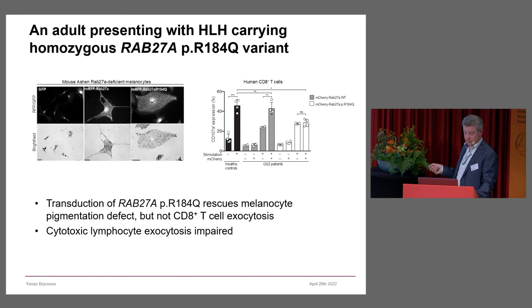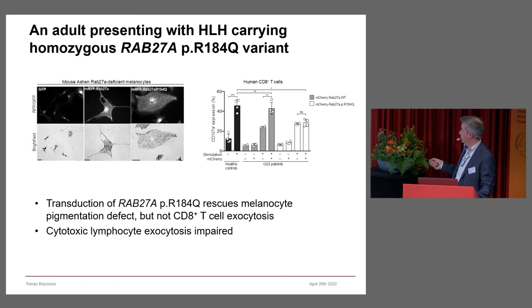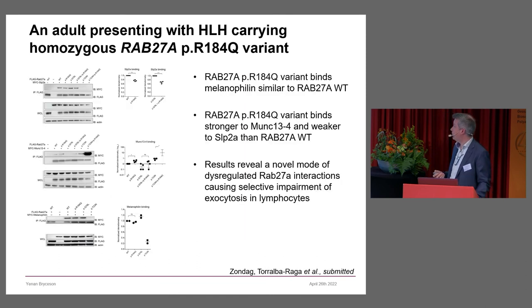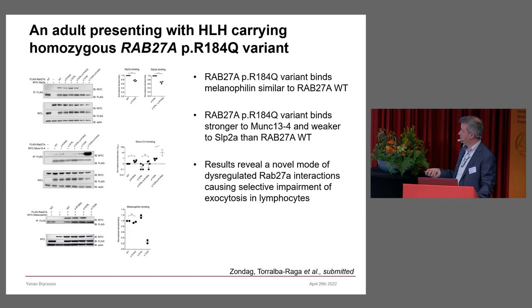We know that mutations in RAB27A that selectively impair interactions with MUNC13-4 have been associated with atypical forms that lack hypopigmentation but display HLH. We looked further at the function of these variants by reconstituting RAB27A-deficient melanocytes and saw that the variant did reconstitute pigmentation to a similar extent as wild-type. But when we transduced these variants into CD8 T-cells from Griscelli syndrome type 2 patients lacking RAB27A, wild-type induced more exocytosis whereas the patient-derived variant did not, showing a clear defect.